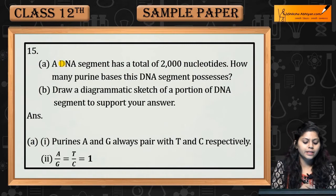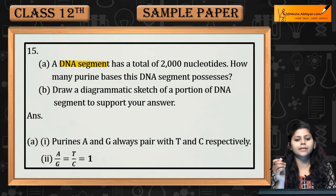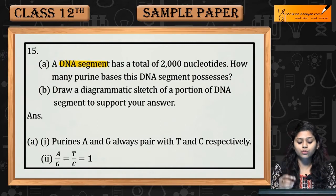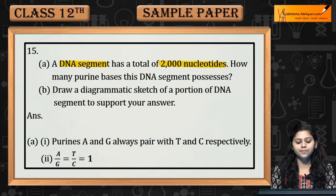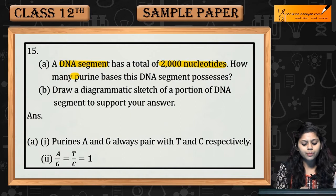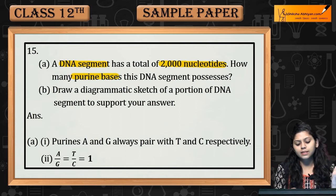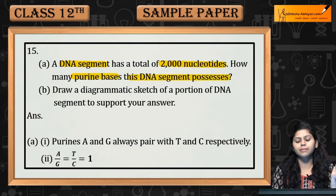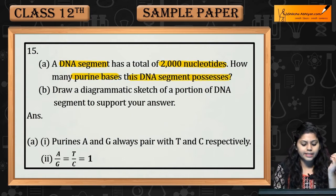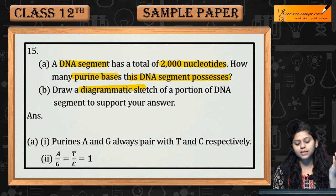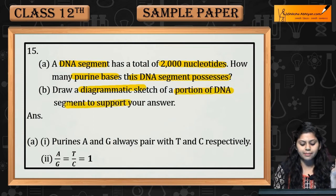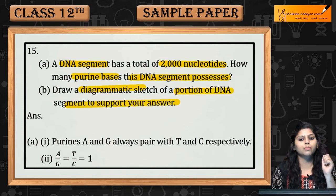Question 15. A DNA segment has a total of 2000 nucleotides. How many purine bases does this DNA segment possess? Draw a diagrammatic sketch of a portion of the DNA segment to support your answer.